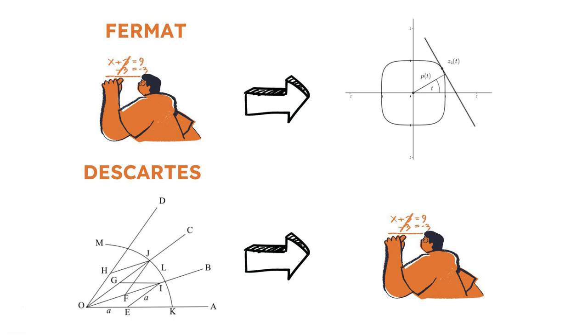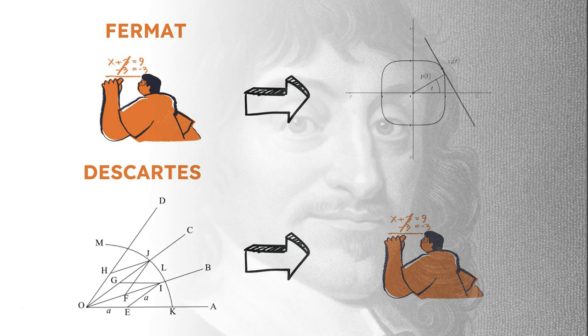Descartes, on the other hand, began with geometric curves and worked out the equations as one of their properties. This different approach meant Descartes ended up handling more complex equations.